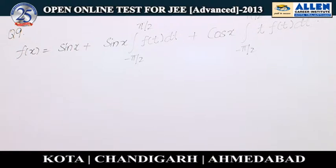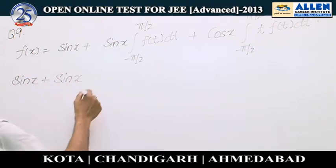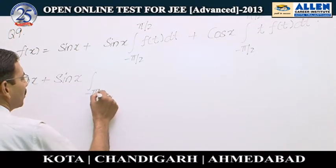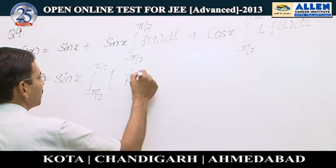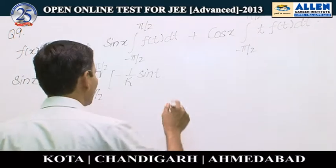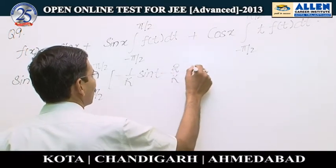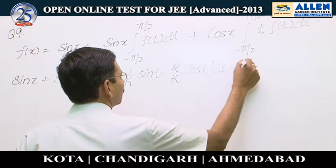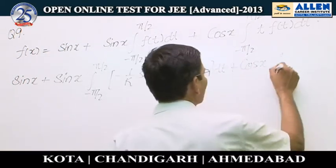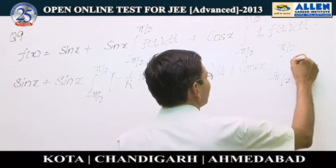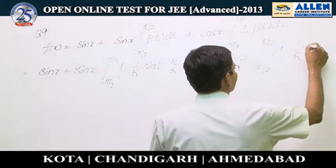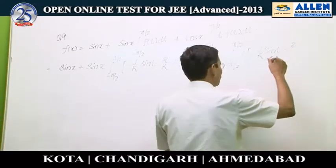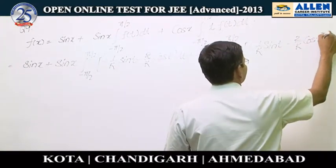So I can replace f(t) by this expression. It will be sin x plus sin x times the integral from -π/2 to π/2, where f(t) will be written as minus 1 upon k times sin t, minus 2 upon k times cos t, dt.